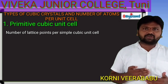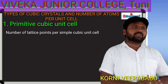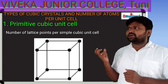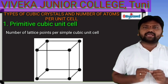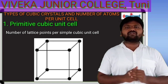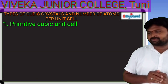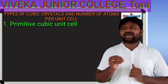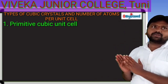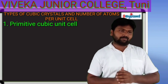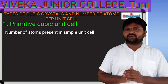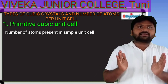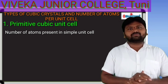Now, the number of lattice points per simple or primitive cubic unit cell. The cube has eight corners, so there are eight lattice points. Each corner atom is shared among surrounding unit cells, and the number of lattice points present at corners of the cubic unit cell is eight.